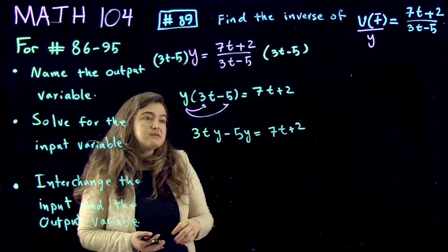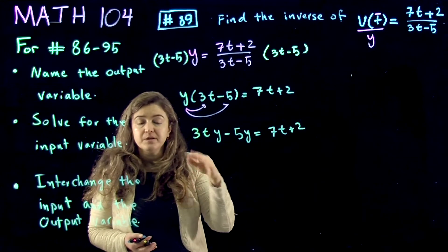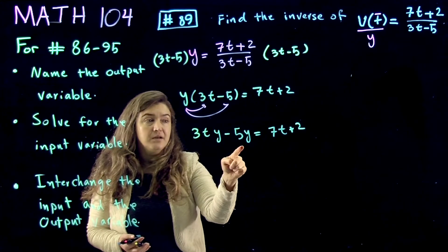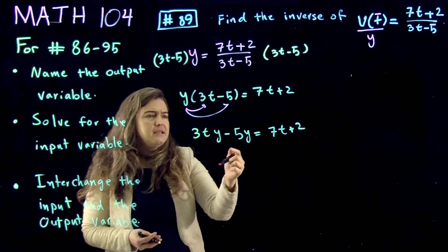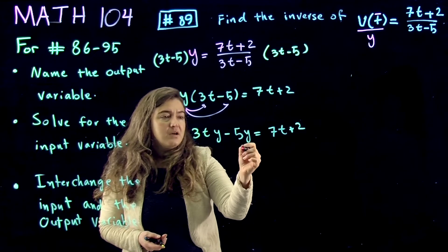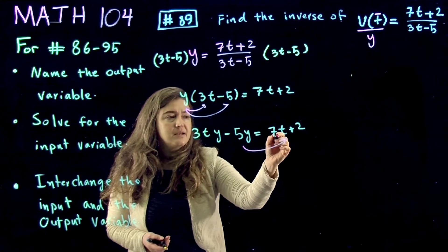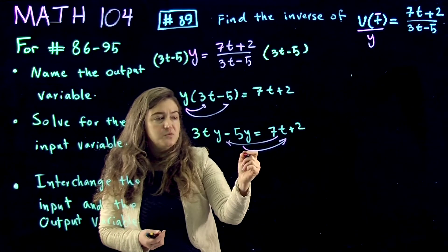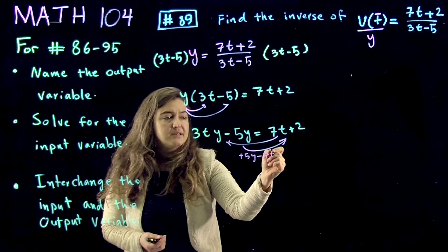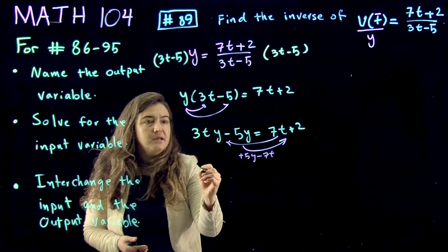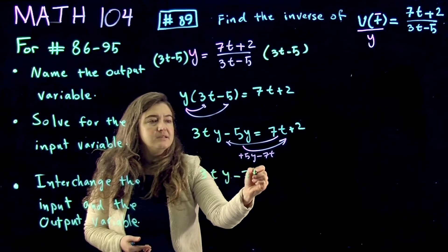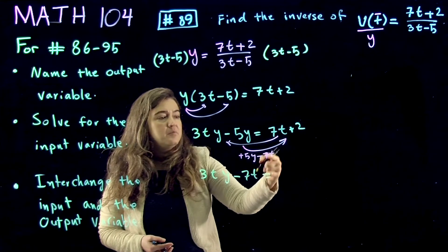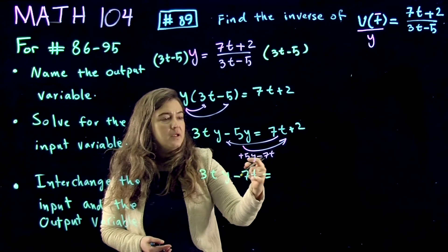The next step is to add or subtract terms to get all terms with t on one side and all other terms on the other side. The term 5y does not include t, so I send it to the other side. The term 7t includes t, so I bring it to this side — adding 5y to both sides and subtracting 7t from both sides. This gives us 3ty minus 7t equals 2 plus 5y.